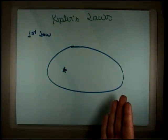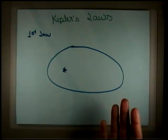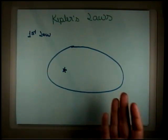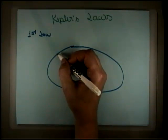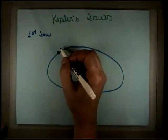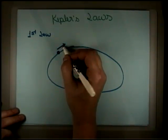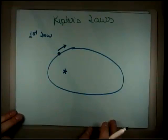If you were to really draw this to scale, it would look like a circle. You wouldn't be able to see how elliptical it is. That's just to make a point here. So there's the sun and there's a planet here and the first law says that the planet orbits in this elliptical orbit. That's it.